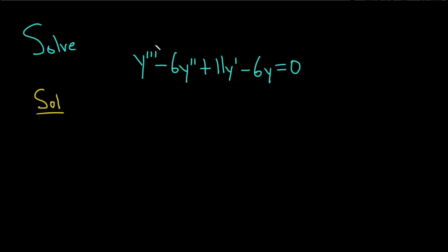So what you do is you basically look at the order of the derivative. This is the third derivative, so you write r to the third power. And then minus 6, this is the second derivative, so you do r squared, plus 11.